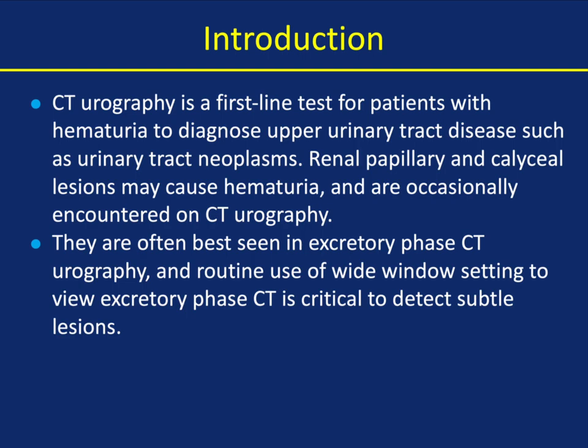Technique becomes important. Wide windows — typically for CT you look at 410 over 7, but you want to look at 550 over 50. If not, it's very easy to obscure things. You shouldn't look at one set of windows over the other; you need to look at both of them. But if you want to look at the calyces, that 550 over 50 is ideal.